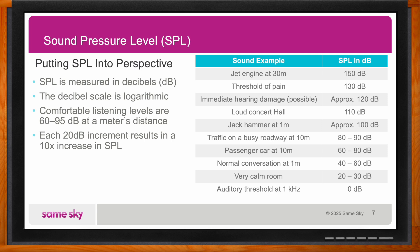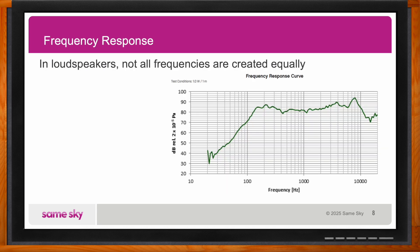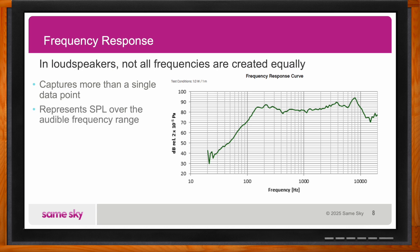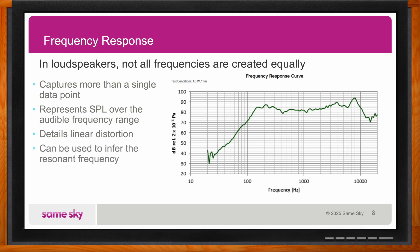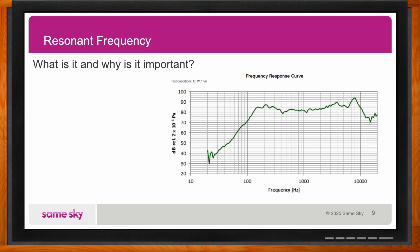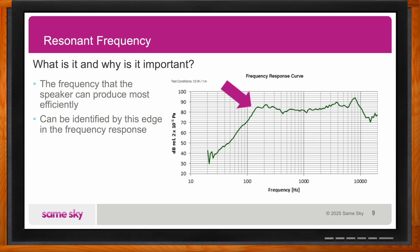What about frequency? The SPL listed in the specification on a data sheet is often just a singular data point. The frequency response of the speaker is a much more detailed characterization of the SPLs a speaker can produce. An ideal speaker would have a perfectly flat frequency response. When selecting a speaker, it's important to understand what media will be played on it — selecting a speaker that performs well in the most utilized frequency range leads to better results. The roll-off into the bass frequencies marks the resonant frequency, which is the frequency a speaker is most efficiently able to produce. Any frequency below this point will have a greater amount of distortion.